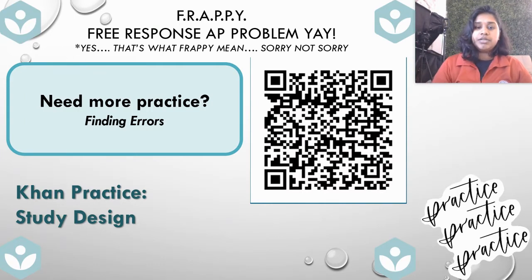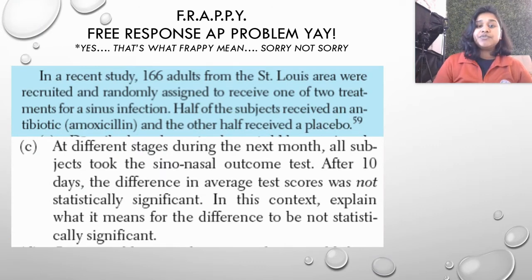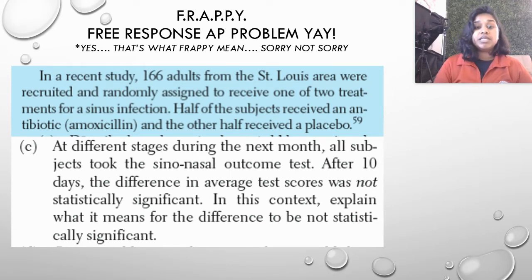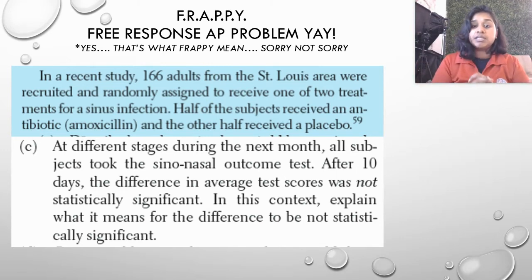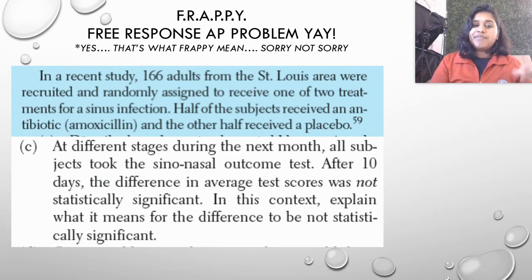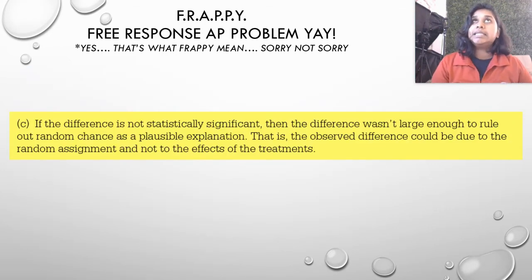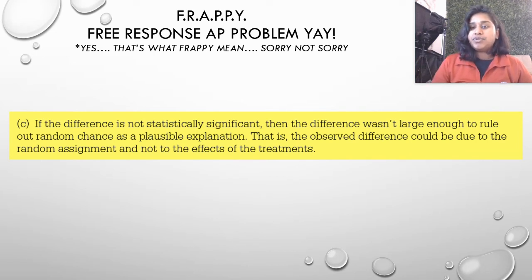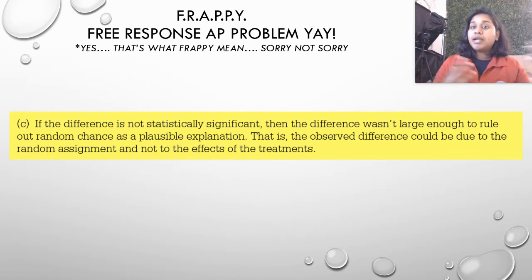Finding errors is really good practice on con study design. Moving on to question C. At different stages during the next month, all the subjects took the sinonasal outcome test. After 10 days, the difference in average test scores was not statistically significant. In this context, explain what it means for the difference to be not statistically significant. The answer: because the difference in average test scores was not statistically significant, the difference wasn't large enough to rule out random chance as a plausible explanation. The observed difference could be due to the random assignment and not the effects of the treatment. Statistical significance means whether or not the result is due to chance — if it's not statistically significant, we can't rule out chance.